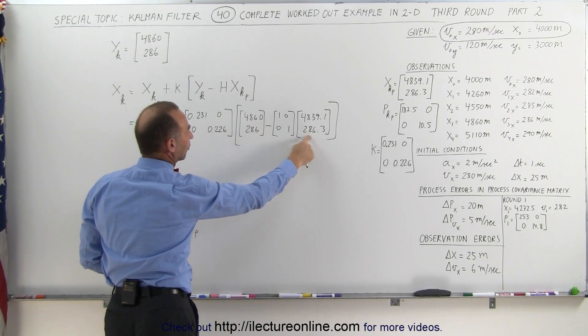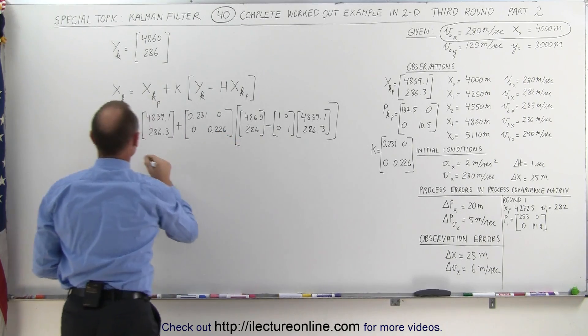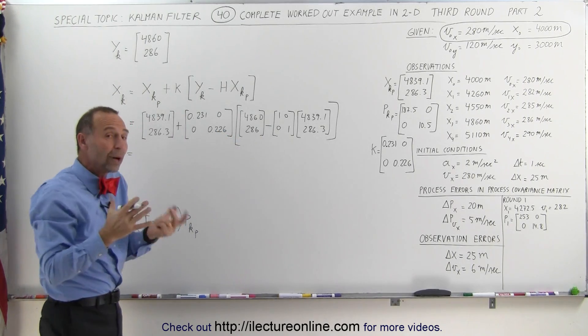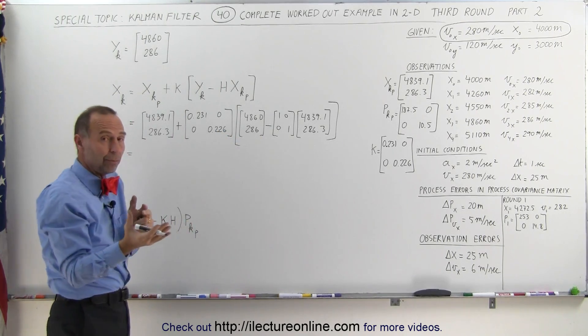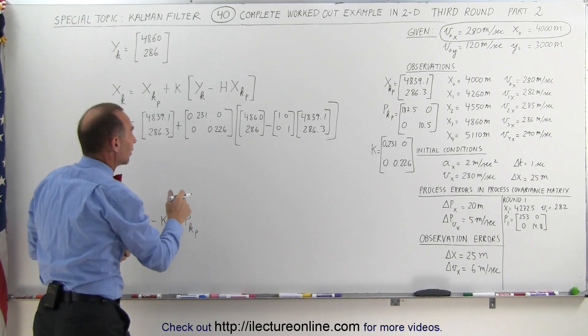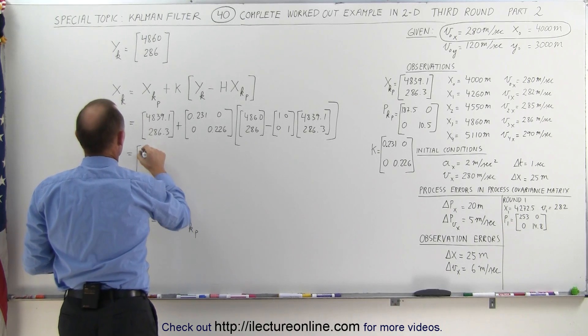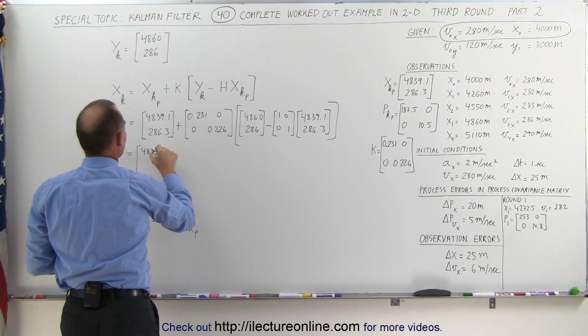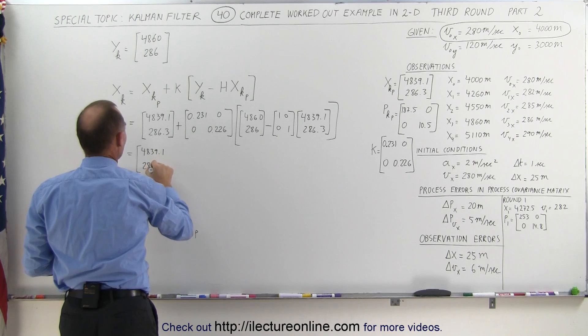Basically, we have to subtract this from that, and then multiply it times the Kalman gain. The Kalman gain basically puts a weight on whether we want to put more value in the predicted value or more weight in the measured value. So we have 4839.1, 286.3...